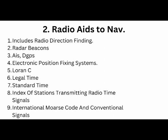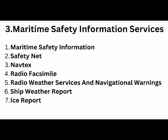Volume 2, NP 282, talks about radio aids to navigation, which includes details of all radar beacons, AIS, and DGPS beacons. It also helps us understand legal time, standard time, and the index of stations which transmit radio time signals. Radio time signals are very important for calibrating your chronometer. It also covers international Morse code and conventional signals — any signals related to aiding in the navigation of the ship come under this volume.